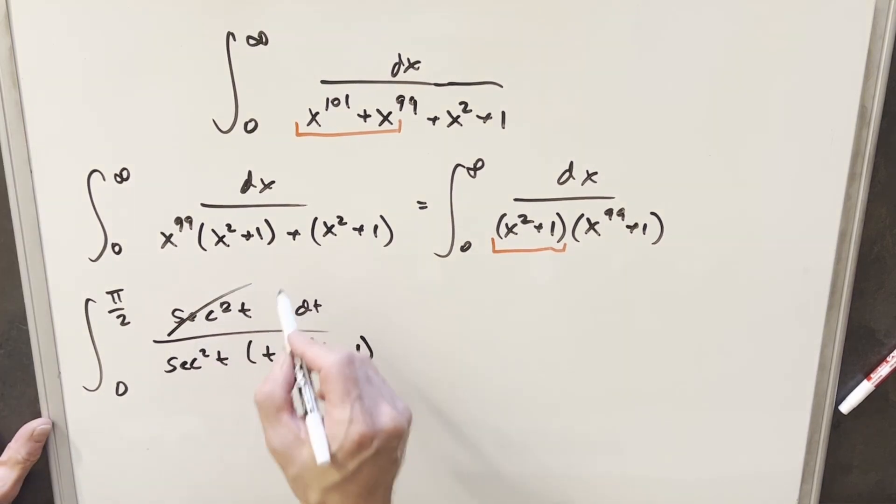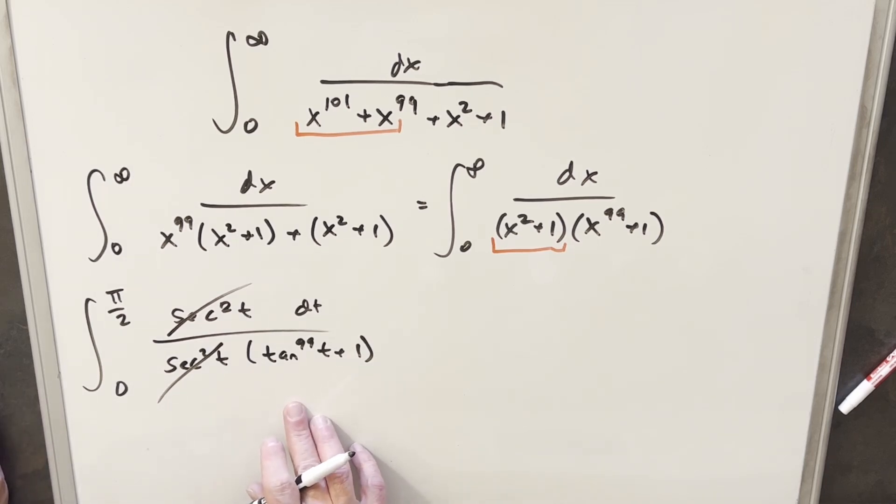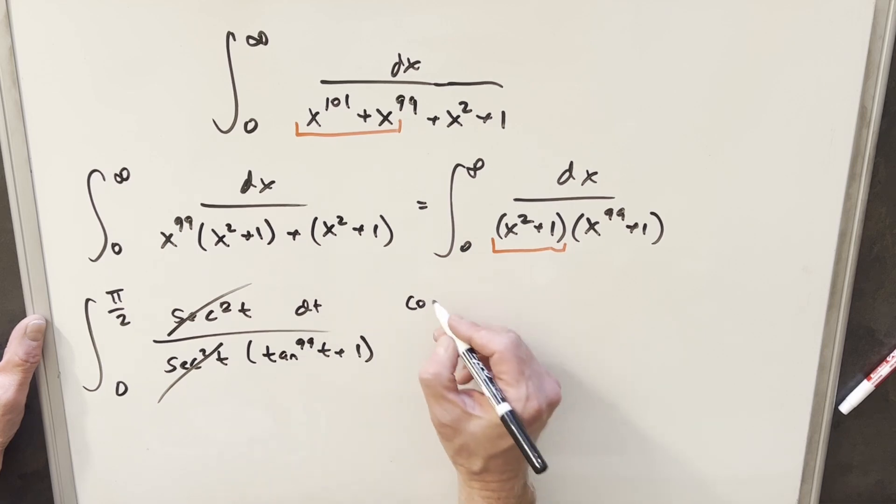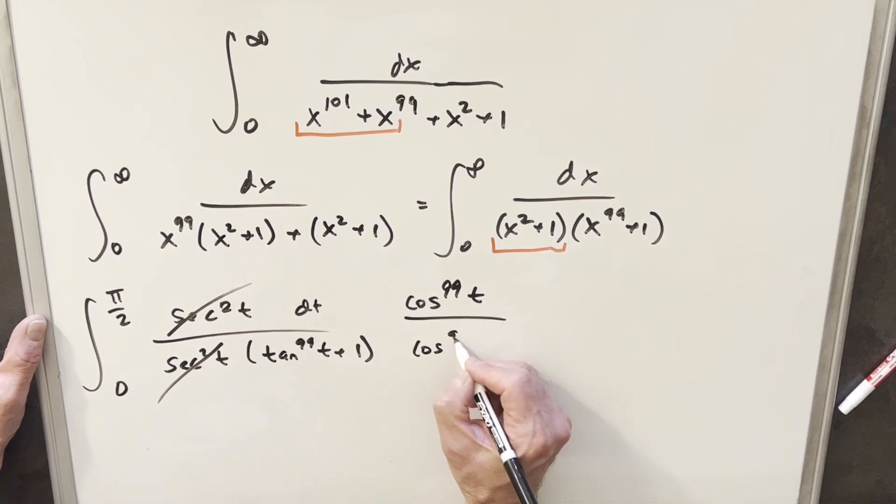And from here, our secant squared terms are just going to cancel. And then at this point, you may notice this is like a perfect situation for King's principle. And what I like to do to kind of transform this a little bit is I want to turn this into sines and cosines. You don't have to, but I find it works a little easier that way. So I'm going to multiply by cosine 99t over cosine 99t. So we're just multiplying by 1.